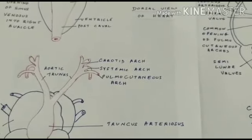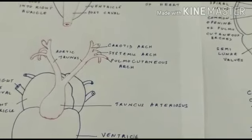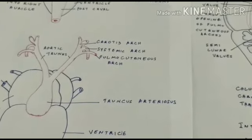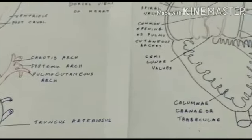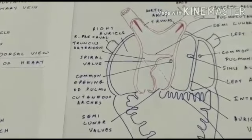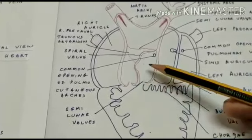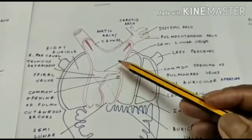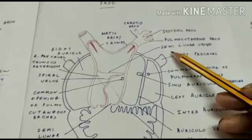The ventricle contracts and the blood goes into the truncus arteriosus, which is a bulbous structure opening on the right side of the ventricle. Blood is pumped through the semilunar valves of the truncus arteriosus, which prevent backflow of blood into the ventricle. Ultimately the blood reaches through the valves into the pulmocutaneous arch and is carried to the lungs and the skin for oxygenation.